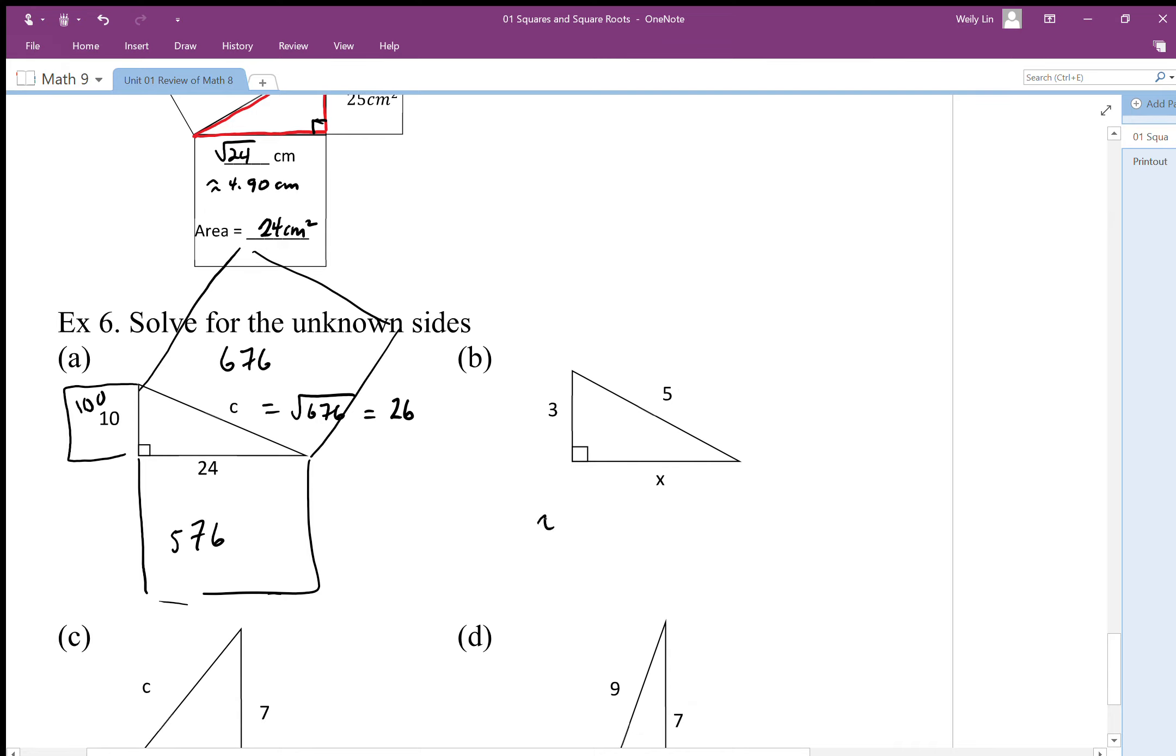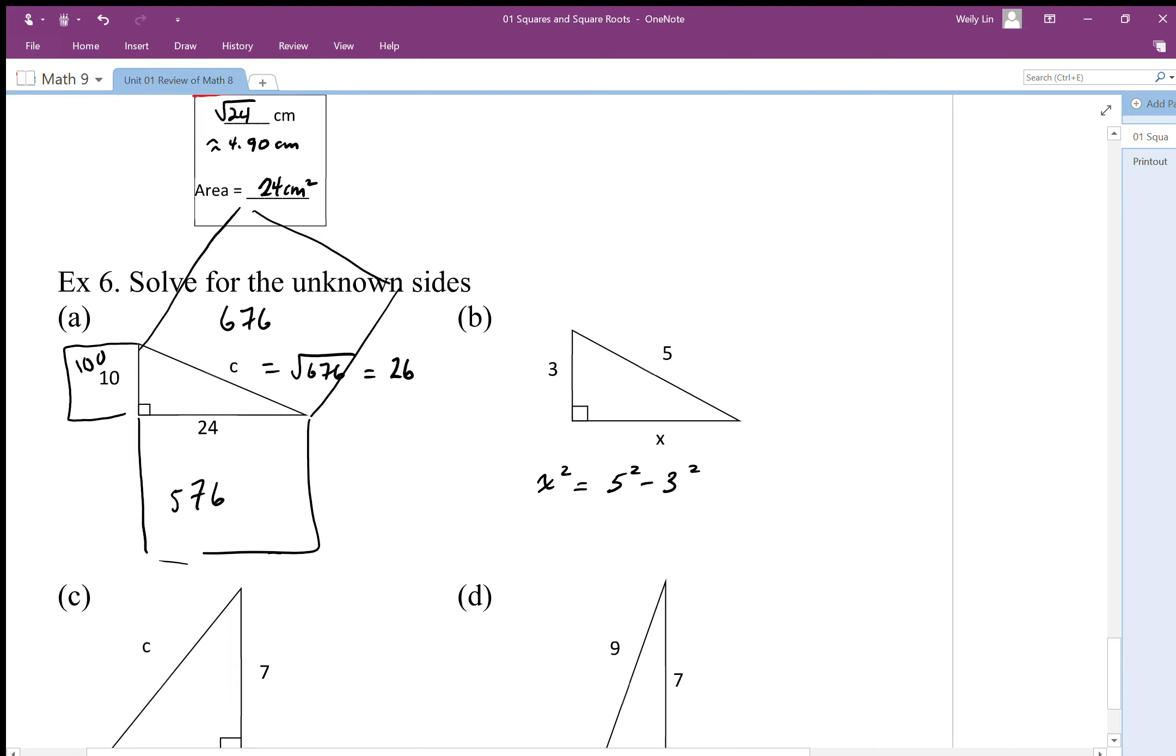So I'm just going to write up the formula here. x squared is equal to 5 squared minus 3 squared. So I end up with x squared is equal to 25 minus 9. x squared equals 16, and I get x is equal to square root 16, which is 4. So this length works out to be 4.